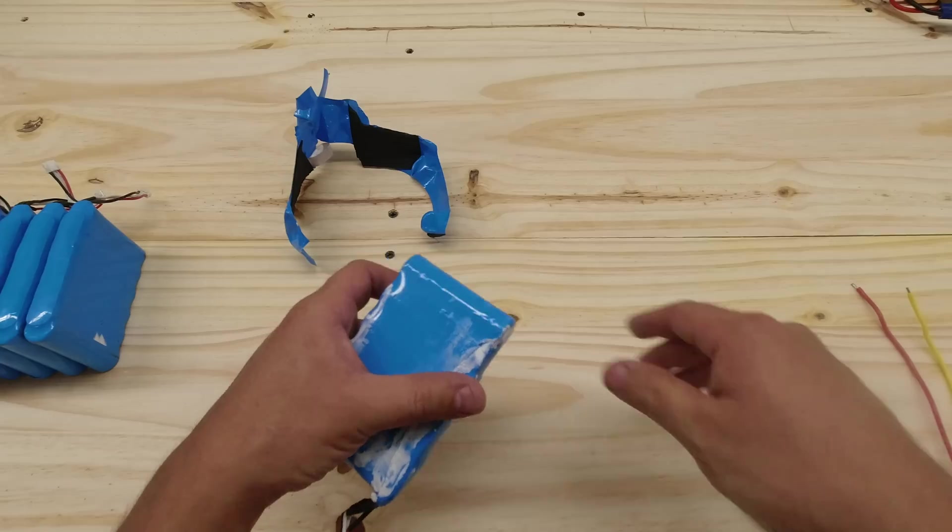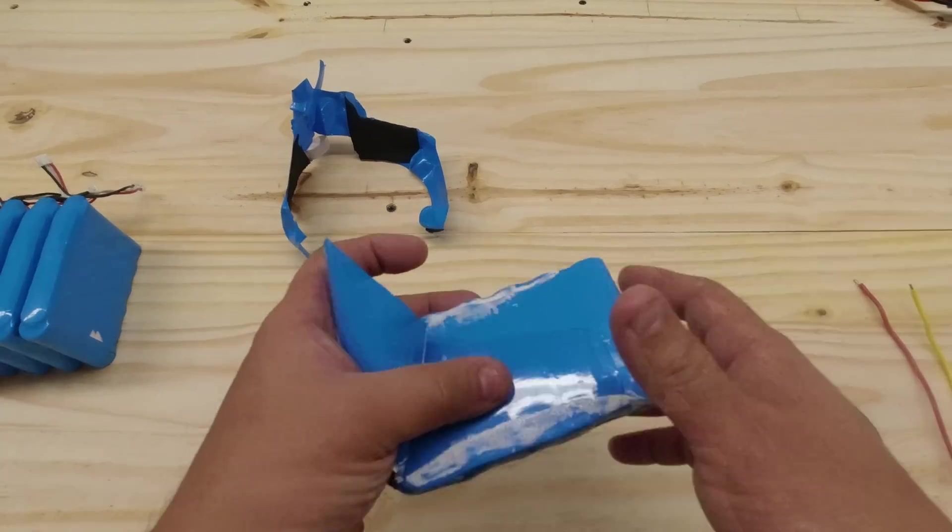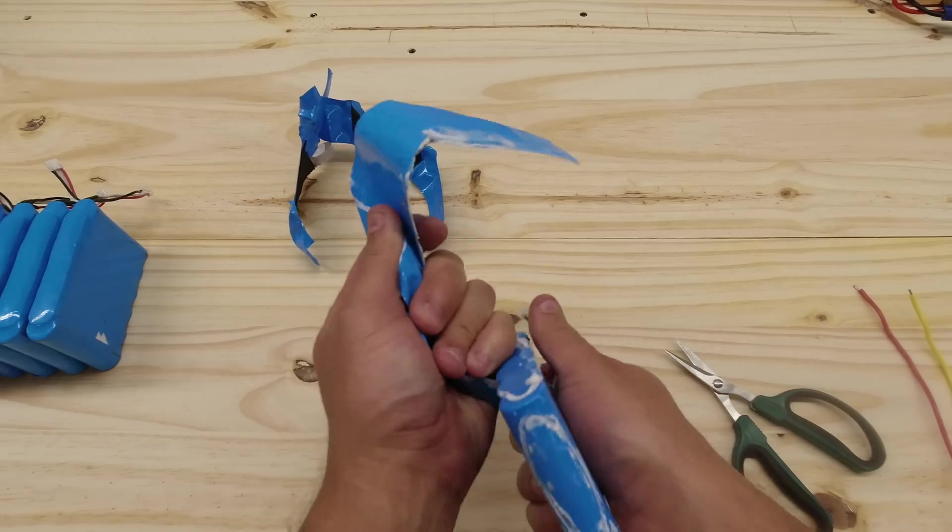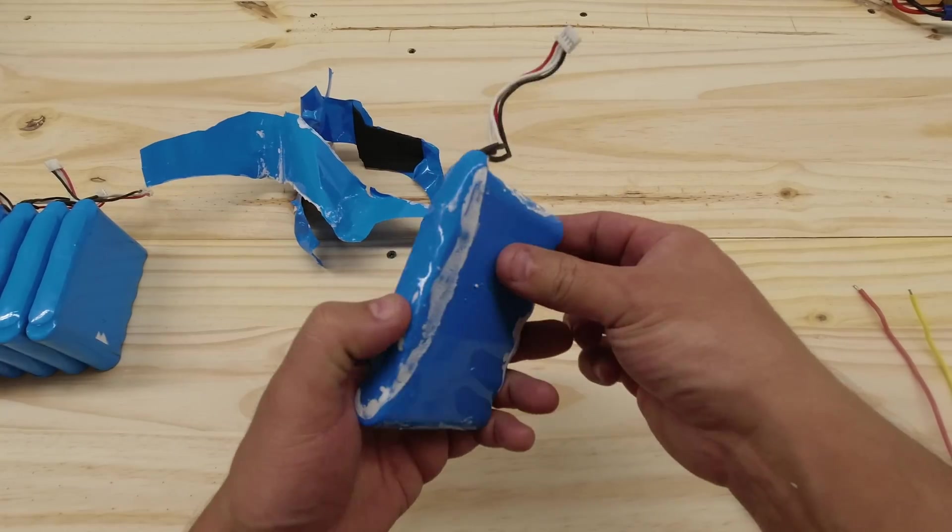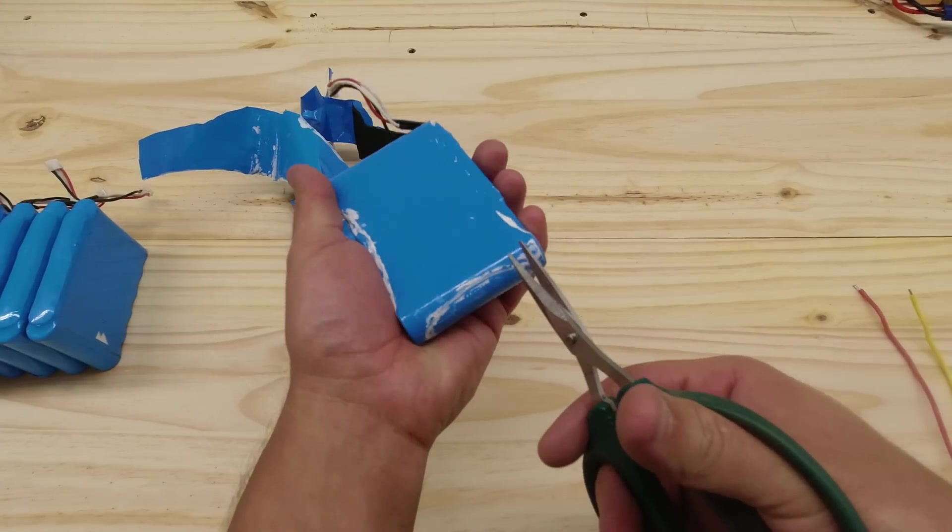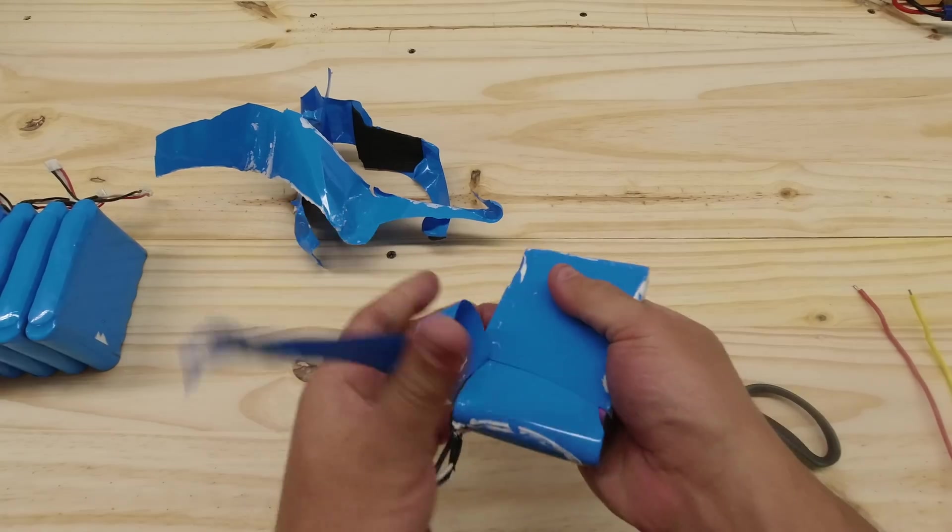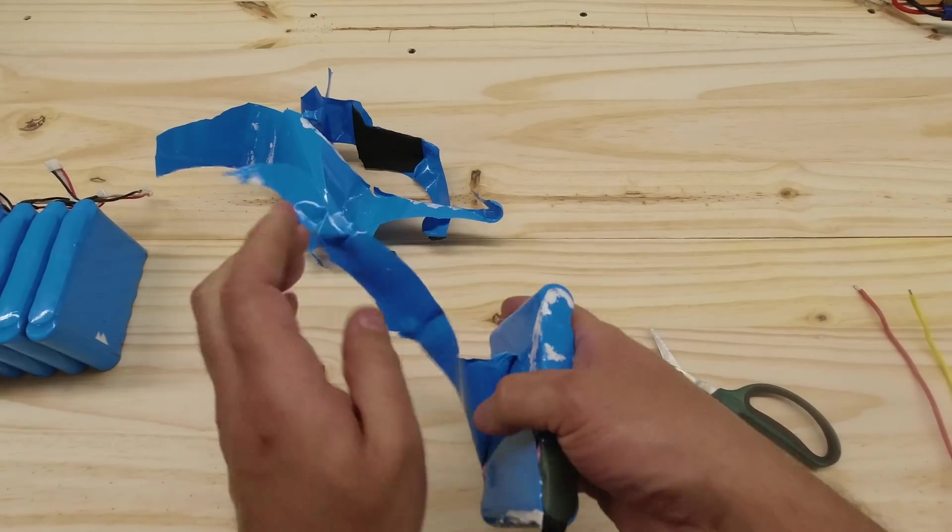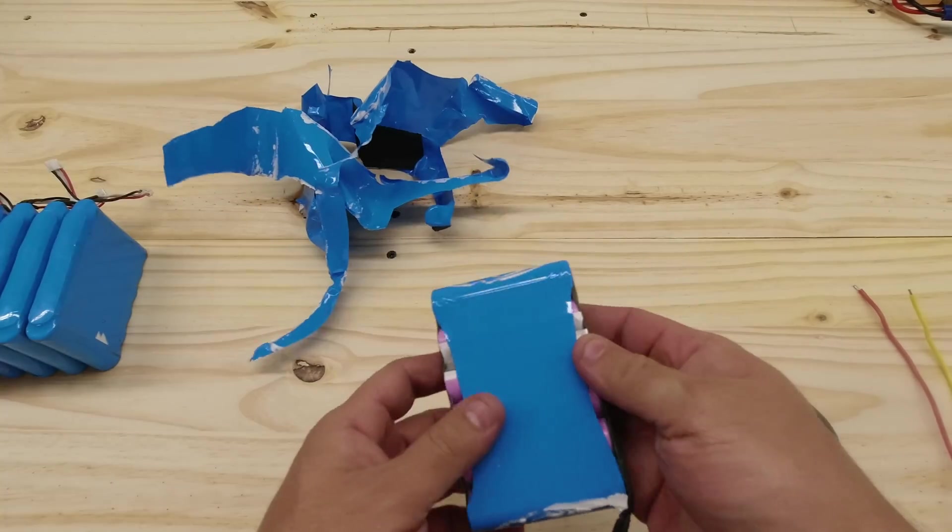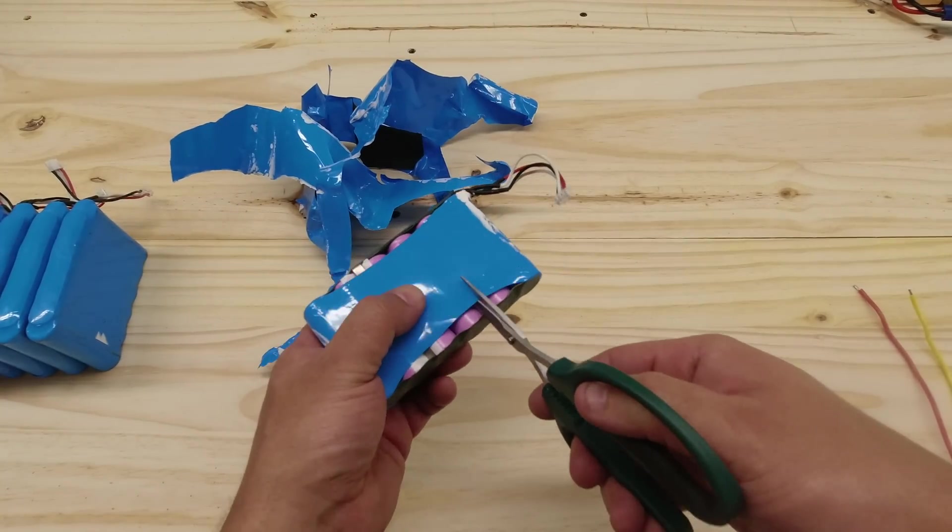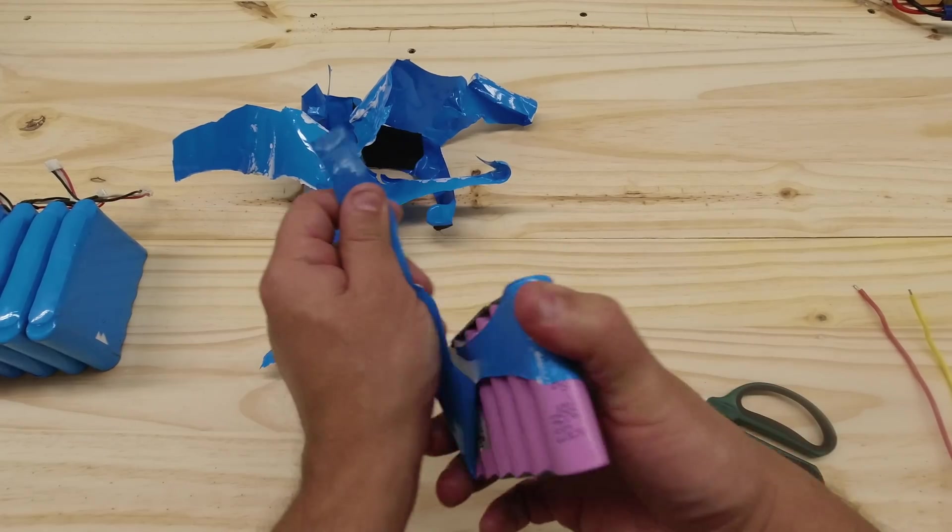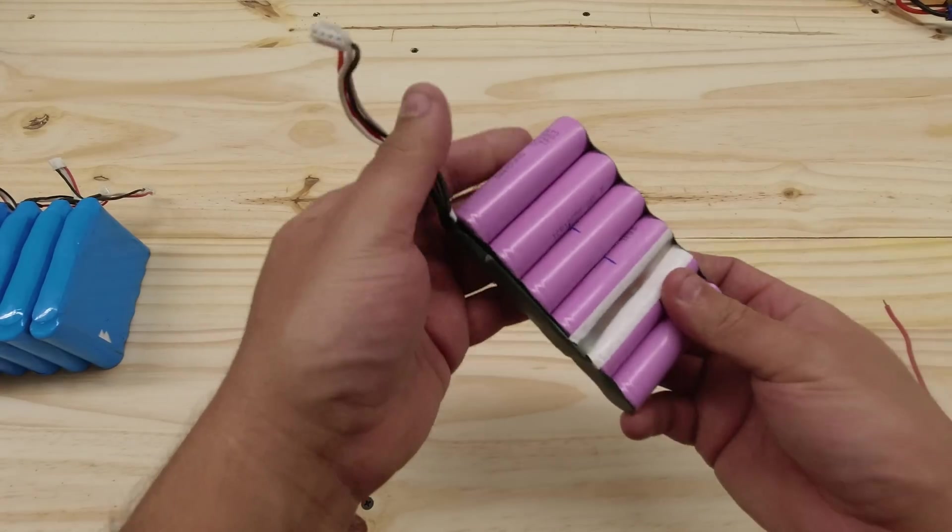Next, you do the inner one. And then you do the final one. These things are very well protected. They have three layers of this stuff. And finally, the final layer. And you finally end up with a pack like this.